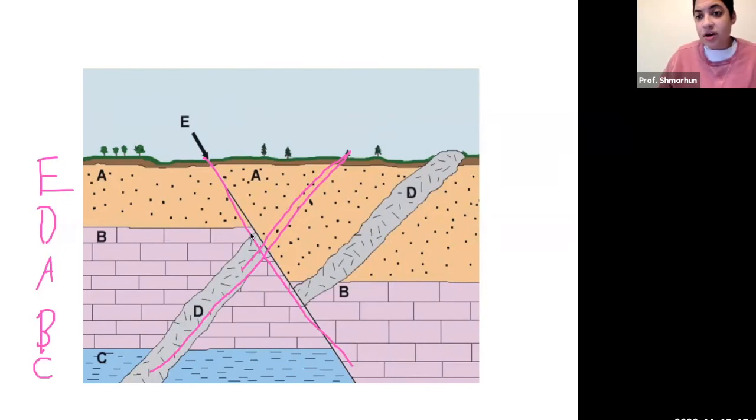Now thinking back to structural geology, what kind of fault is this? Remember, here we have our footwall block because it looks like a foot, and then we have our hanging wall on the opposite side of the fault line.